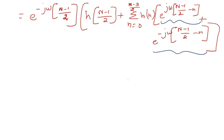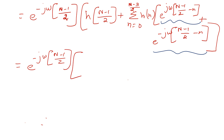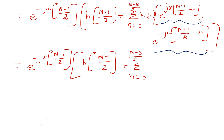On the basis of that Euler's formula calculation, if we expand these exponential terms, the expression becomes e^(-jω(N-1)/2) into h((N-1)/2) plus summation n equal to 0 to (N-3)/2 of 2 times h(n) cos(ω((N-1)/2 - n)).